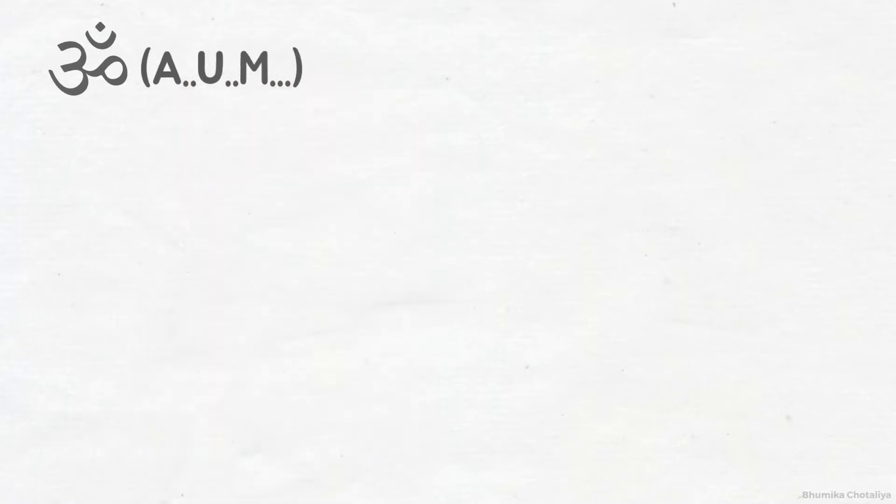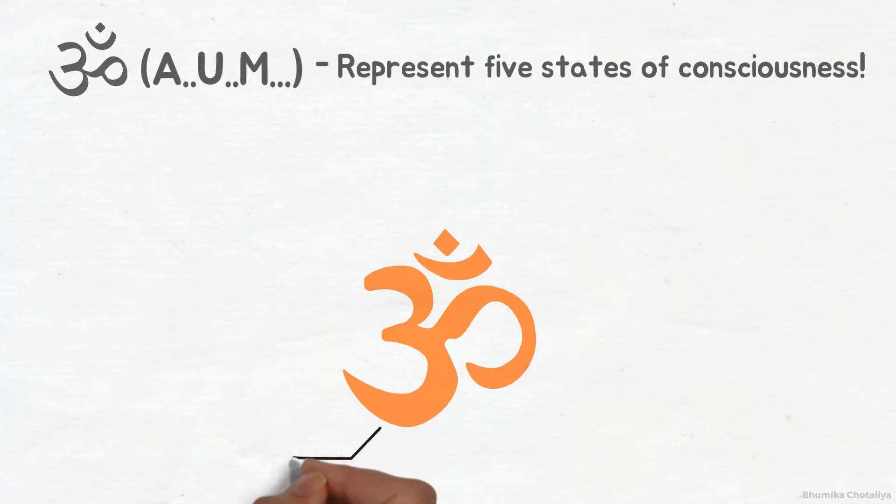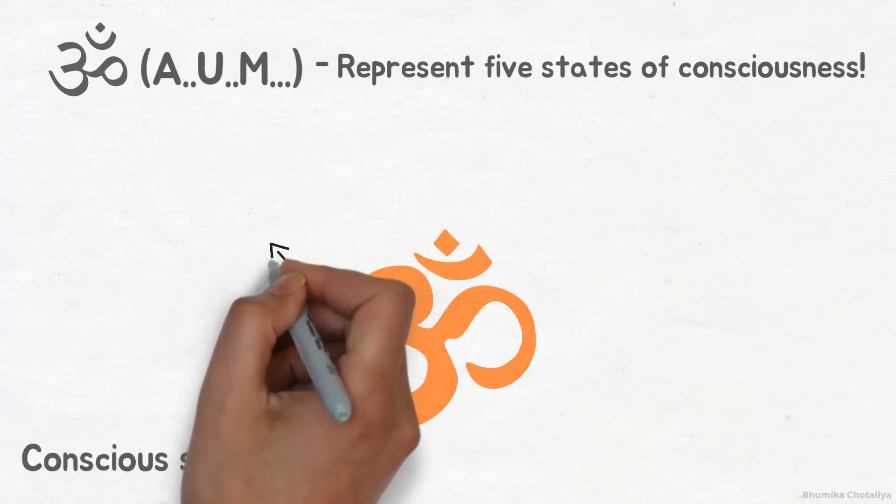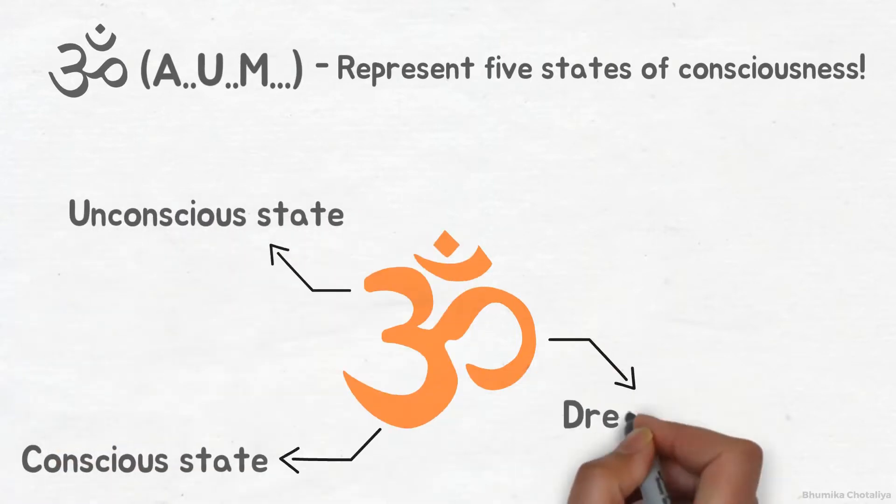The physical symbol of Om in Sanatan Dharma represents five states of consciousness. The lower left curve represents the conscious, waking state of being. The top left curve is the unconscious state. The lower right curve is the dream state, the state between waking and unconscious.